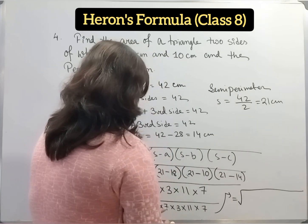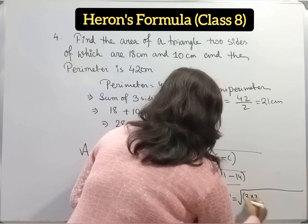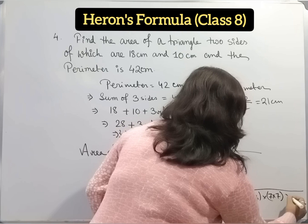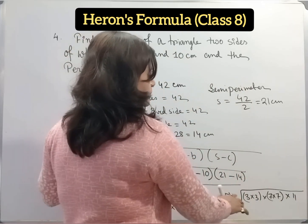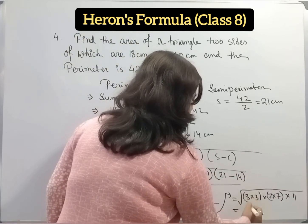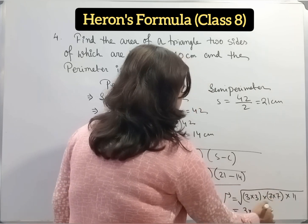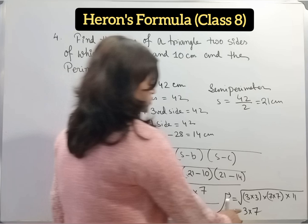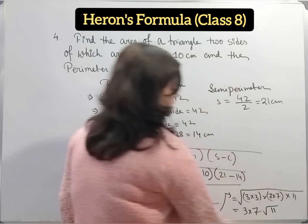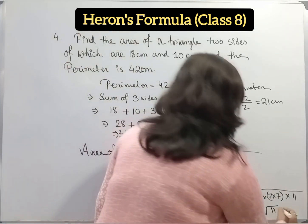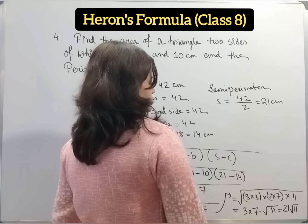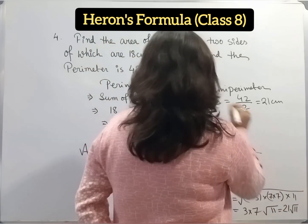Now we will make pair of 3, 3 into 3. Then pair of 7, 7 into 7, and 11. So when I remove this square root sign, at that time, one 3 will come from this pair and once 7 will come from this pair. So 3 into 7, and this 11 will be under the root. So 3 into 7 is 21. 21 root 11. This is the answer. So our answer is 21 root 11 square centimeter.